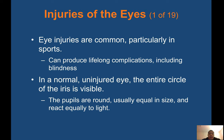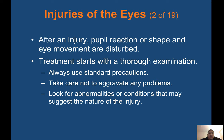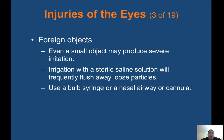Eye injuries are common, particularly in sports, and can produce lifelong complications including blindness. In a normal uninjured eye, the entire circle of the iris is visible. Pupils are round, usually equal in size, and react equally to light. After an injury, pupil reaction, shape, and eye movement may be disturbed. Treatment starts with a thorough examination — always use standard precautions and take care not to aggravate any problems. For foreign objects: even a small object may produce severe irritation. Irrigation with sterile saline solution will frequently flush away loose particles — use a bulb syringe or a nasal cannula attached to an IV bag. You could hook up a nasal cannula to an IV bag, turn it upside down on the bridge of their nose, and just let the IV bag flow; it'll keep flowing for a good 10 minutes or so.